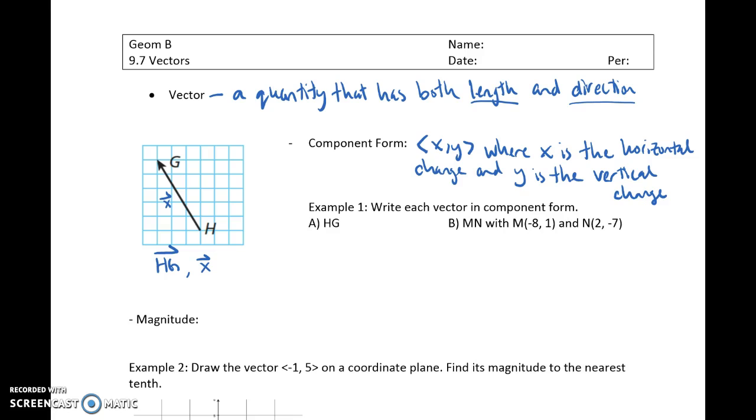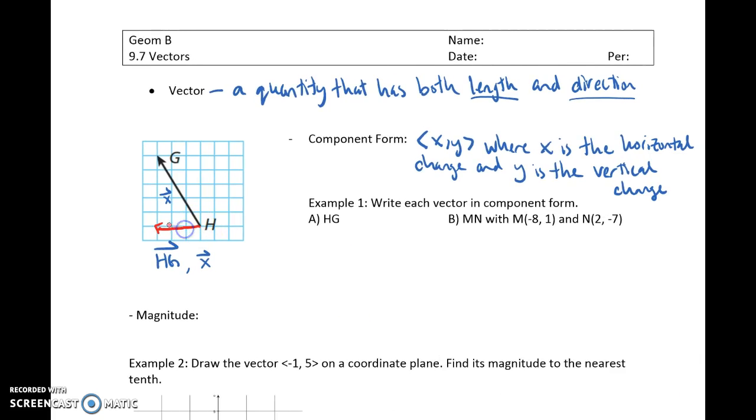So the component form of vector HG, we would look at basically your rise and your run, your slope. The vertical and horizontal changes, so going from H to G, we went left 1, 2, 3, so that's negative 3. And the vertical change, we went up 1, 2, 3, 4. So the component form of HG is negative 3, 4. Sound familiar? Hopefully.